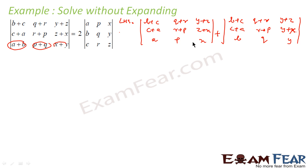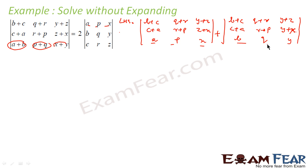Now we have to look at what we have. If you see, a, p, x is here, and b, q, y is here - that means somehow we have got one row appearing in both of these determinants. Just think about this: our thought process is that we got exactly the same row we are looking for. We can swap rows using row swap properties. If we can convert the other rows into the exact same rows, the problem is solved.